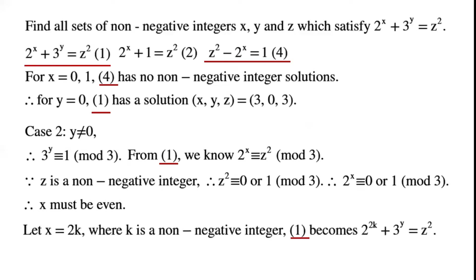Let x equal 2k, where k is a non-negative integer. Equation 1 becomes 2 to the power of 2k plus 3 to the power of y equals z squared. So 3 to the power of y equals z squared minus 2 to the power of 2k, which is a difference of two squares and can be written as (z plus 2 to the power of k) times (z minus 2 to the power of k).